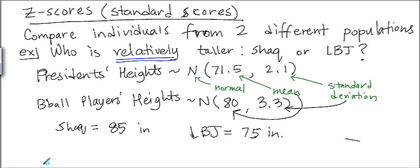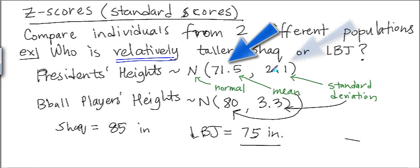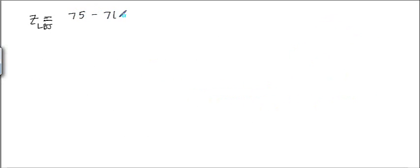Let's calculate the Z-scores for both. For President Lyndon B. Johnson first: take his observation minus the mean for presidents, divided by the standard deviation for presidents. That's 75 minus 71.5, divided by 2.1, which gives 1.67 standard deviations.